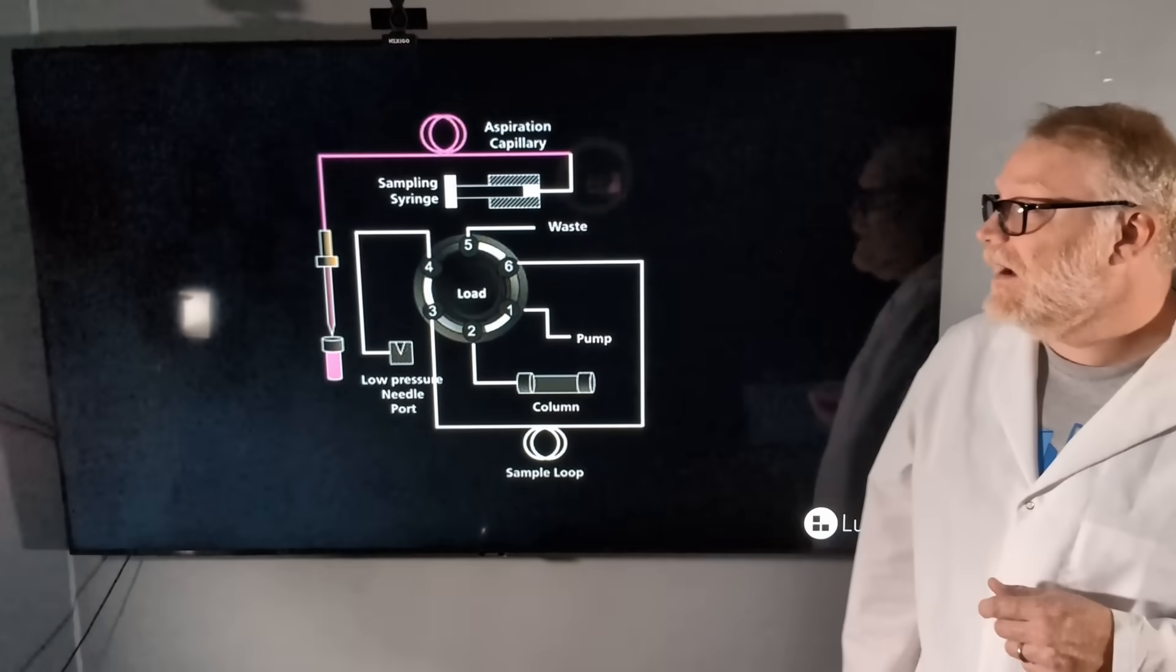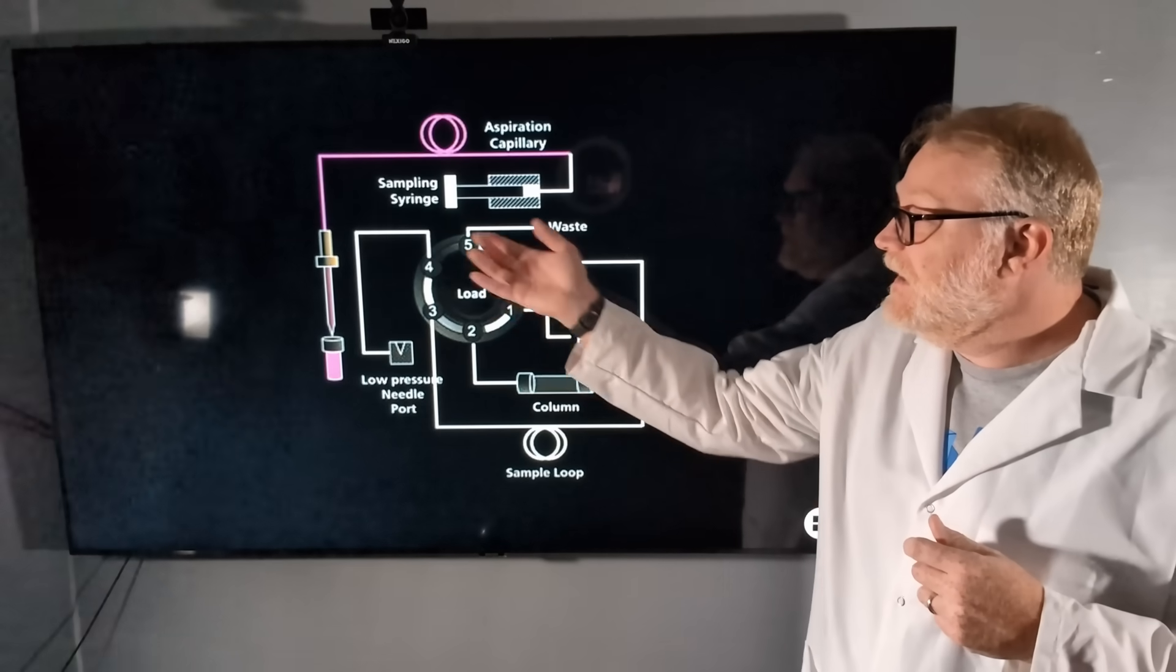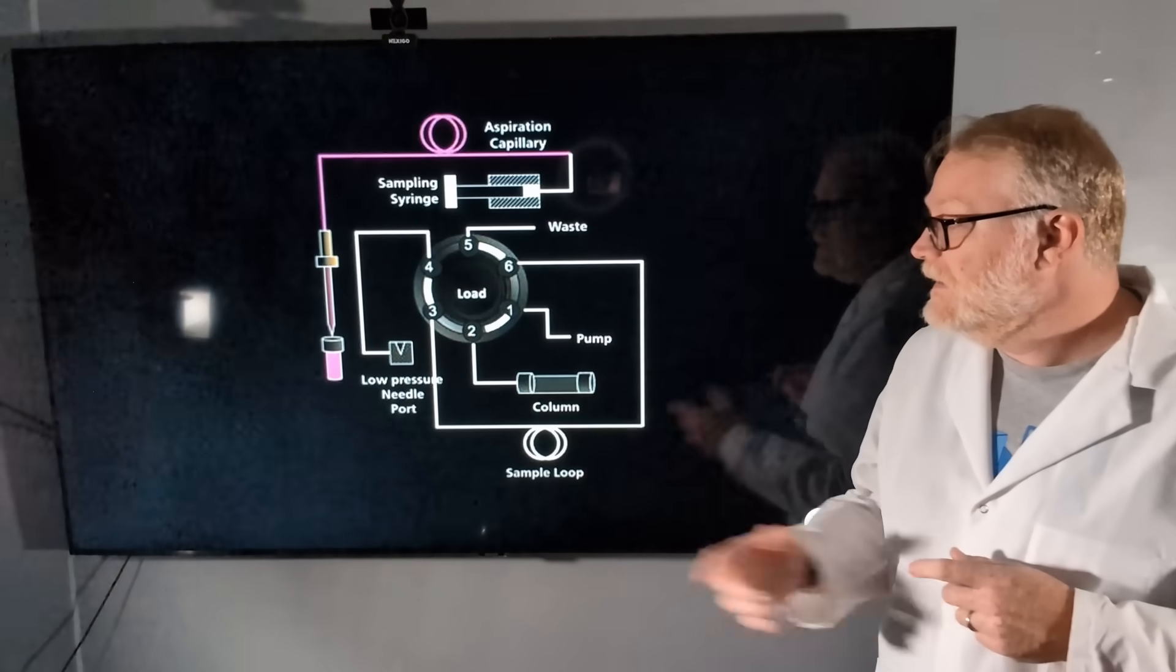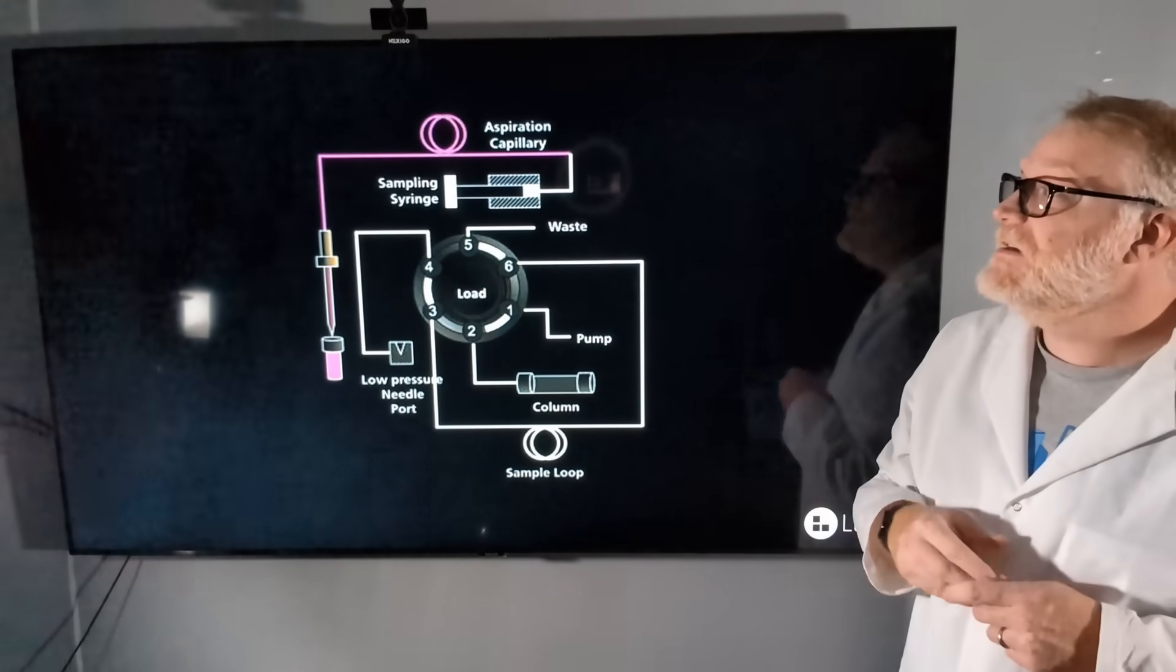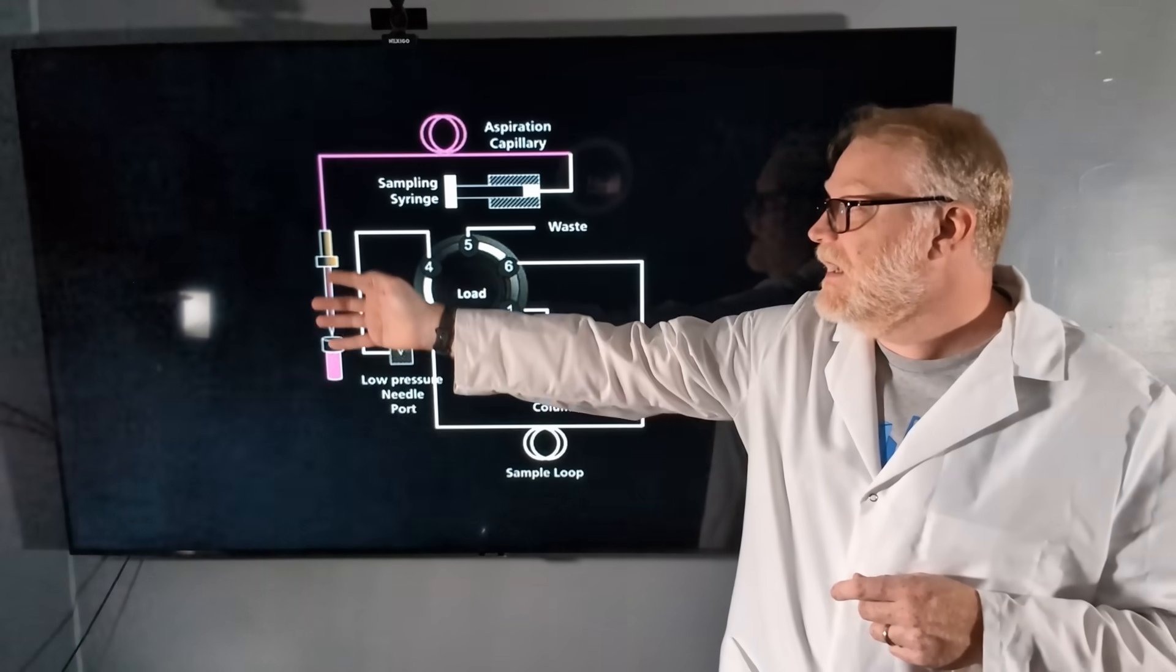An example diagram here shows us our injection valve, our pump and column, our sample loop, our aspiration capillary, sampling syringe, our needle, and a low-pressure needle port.